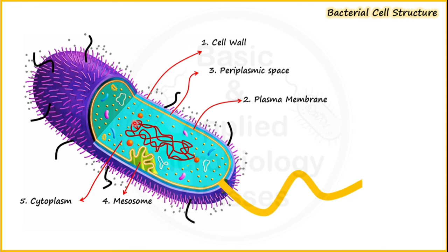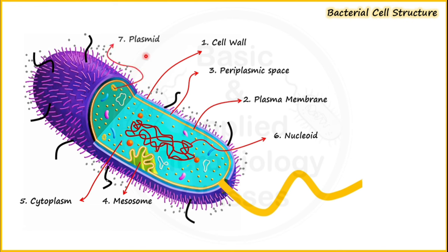Inside the cytoplasm, several components and structures are present inside the bacterial cell. In the center of the cell we can observe the presence of filamentous genetic material, which we call the nucleoid. In addition to the genetic material in the center, an extra-chromosomal DNA molecule is also present in the bacterial cell, and that we call a plasmid.